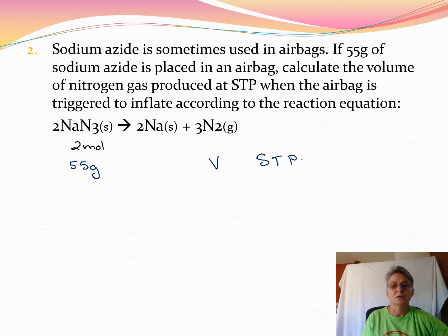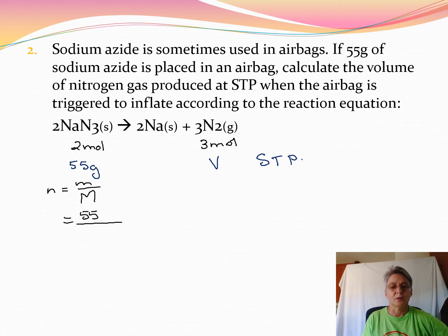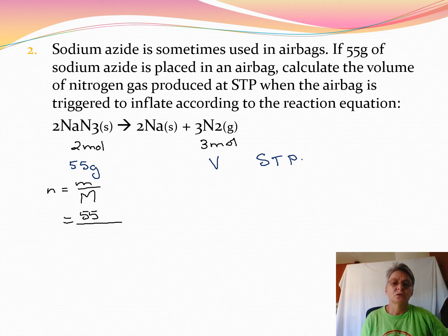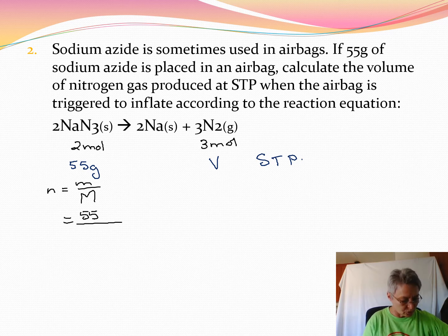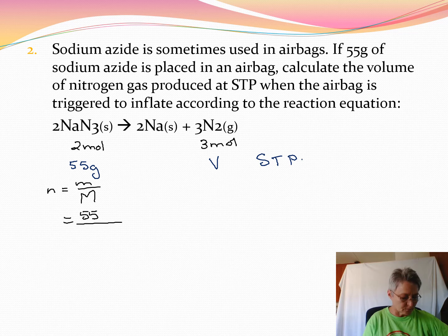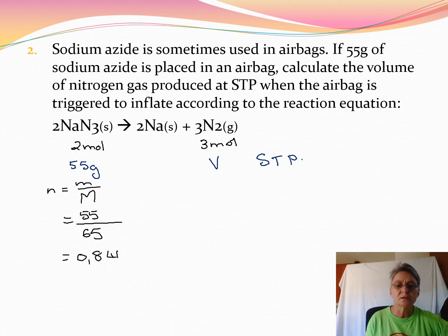2 mole sodium azide gives us 3 moles of nitrogen. So here we need to change this mass to moles. It's 55 divided by - now sodium's mass is 23 and nitrogen 14, so it's 23 plus 3 times 14, which is 65. That divides into 55, and we get 0.846 moles.